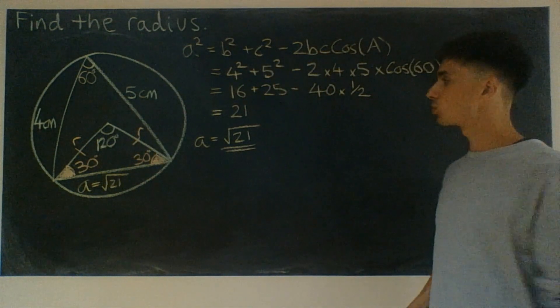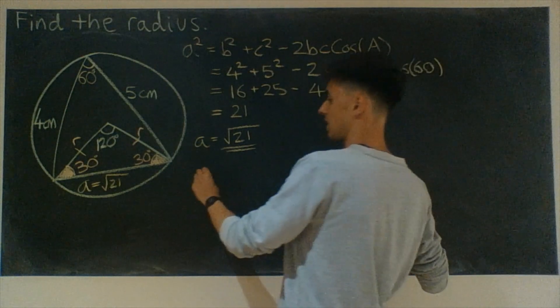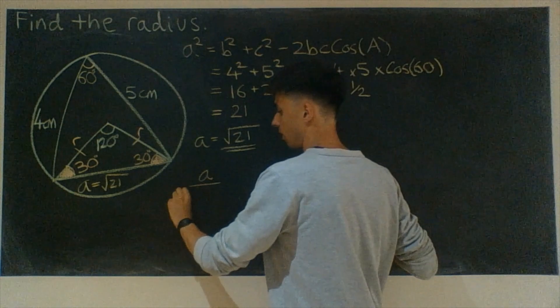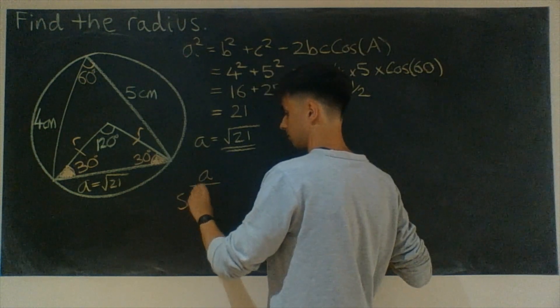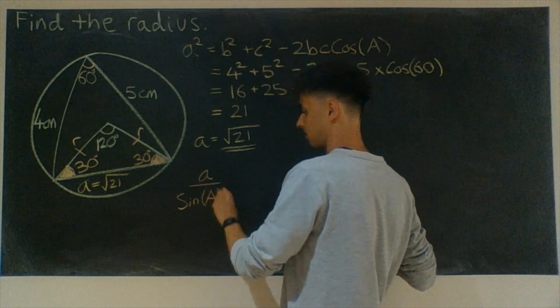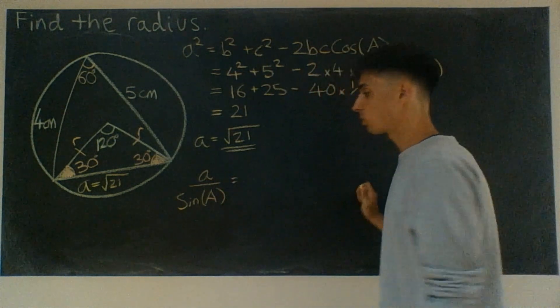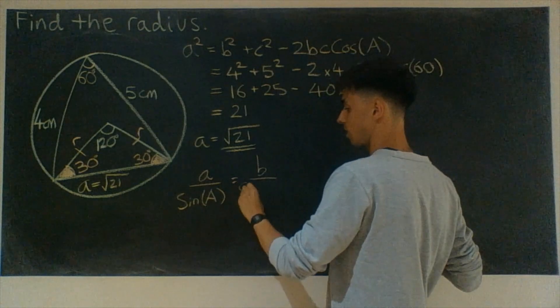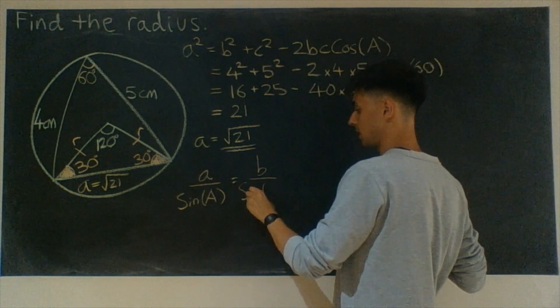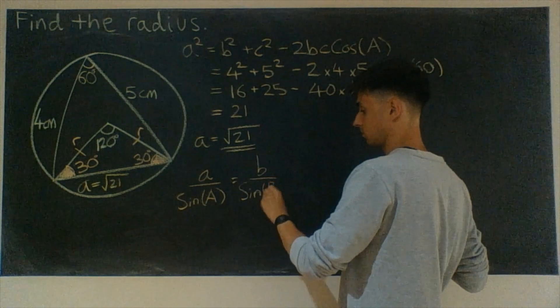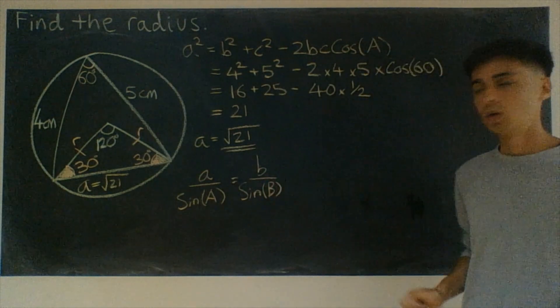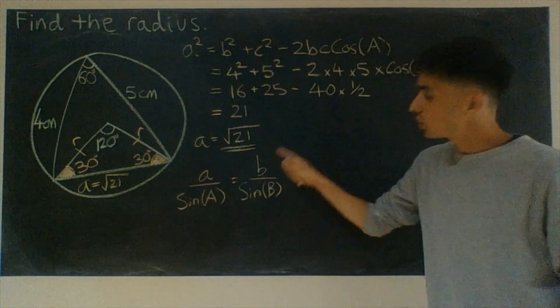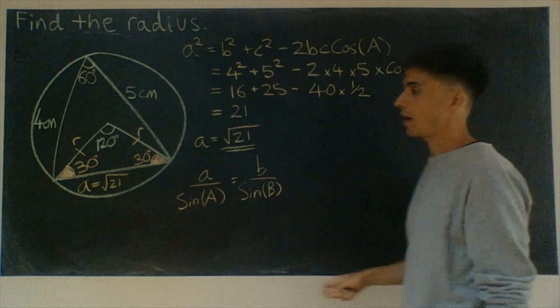And the sine rule tells us this. It tells us that a side A divided by sine of the angle A must be equal to, in a triangle, the side B over sine of the angle B. What we need to do to finish off this question is put some things that we know into the sine rule.